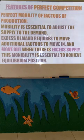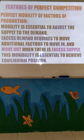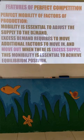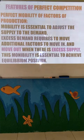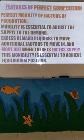Next is free mobility of factors of production. Mobility is essential to adjust supply to demand. Supply and demand have to adjust to attain equilibrium. To adjust demand and supply, mobility of factors of production or resources is highly essential. If there is excess demand in any area of the market, additional factors need to move into that particular area. If there is excess supply, resources or factors of production need to move out from that particular market. Movement of factors of production is essential, and this mobility is essential to achieve the equilibrium position, where demand and supply are equal.